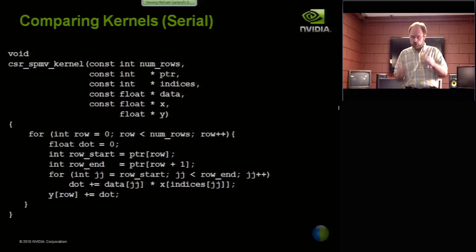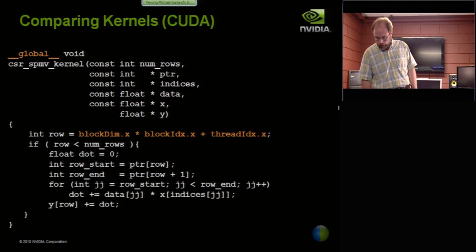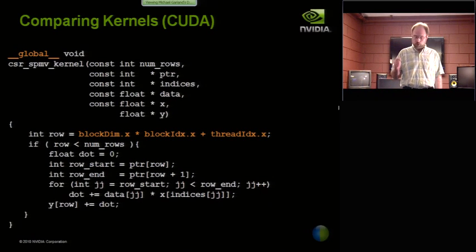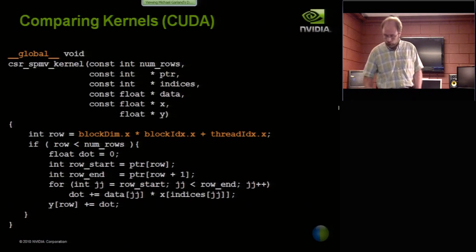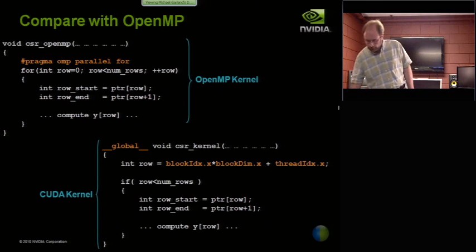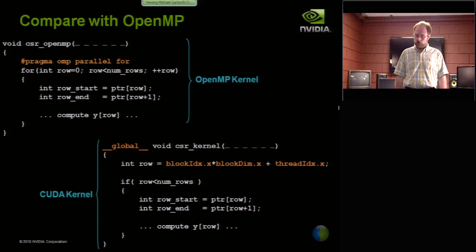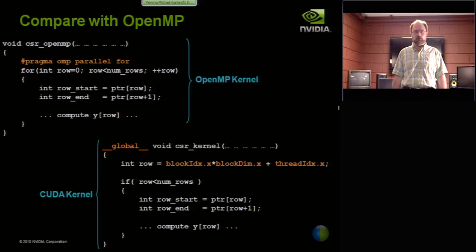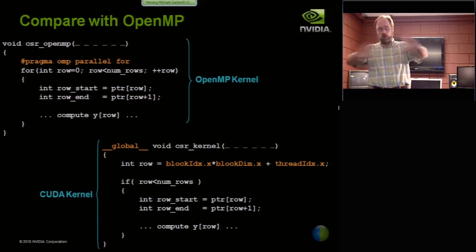If you wrap that all up into an actual executable kernel, this is the sequential implementation and this is the parallel CUDA kernel. You'll notice that I laid them out specifically so they kind of lined up. The only difference is this one has a loop and has no host specifier. This one has a global specifier and it computes what row it is at the beginning instead of having a loop. This is also the sort of thing that you would do with OpenMP. If I was parallelizing on the CPU with OpenMP, I would be very tempted to just put this pragma OpenMP parallel for before that loop, which tells the OpenMP system to spread that loop across many threads across all the cores of the machine.